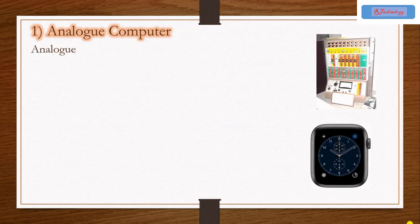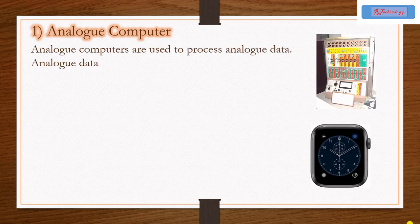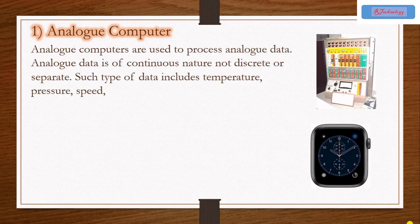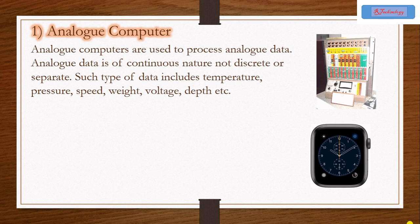First we are going to learn about analog computer. Analog computers are used to process analog data. Analog data is of continuous nature and not discrete or separate. Such type of data includes temperature, pressure, speed, weight, voltage, depth, etc.